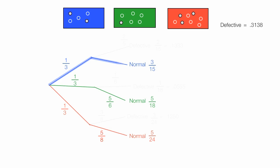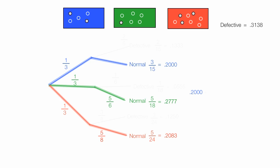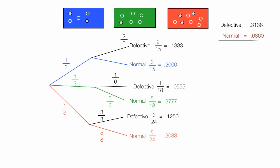To calculate the probability of picking a normal part, I take the three normal branches and add them together, converting to decimals as well. This gives approximately 0.6860, or about a 68.6% chance of picking a normal part. The probability of picking a defective part and the probability of picking a normal part should add up to one, or 100%, because something is always going to happen.